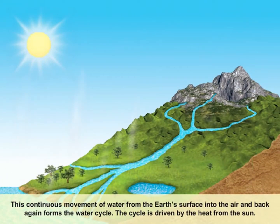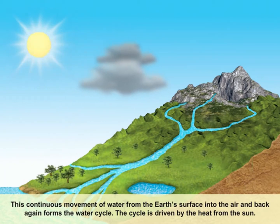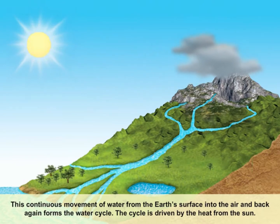This continuous movement of water from the earth's surface into the air and back again forms the water cycle. The cycle is driven by the heat from the sun.